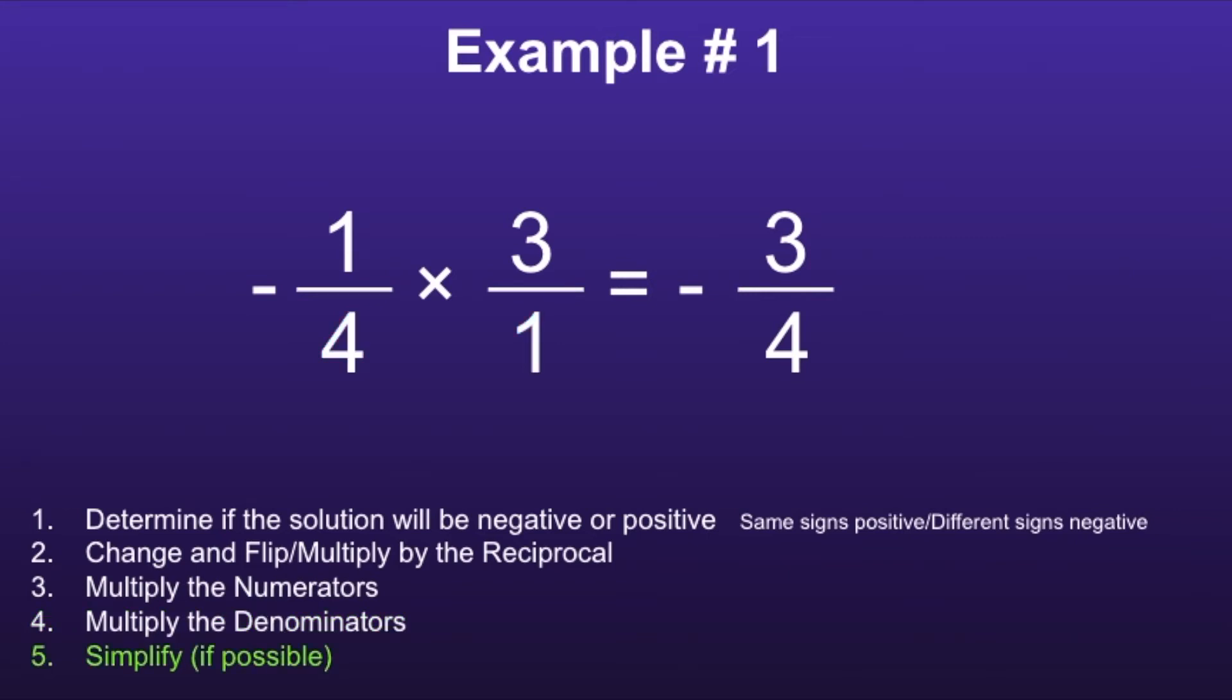And finally, step five: simplify if possible. Three-fourths is the final simplified answer, so we can't simplify anymore. So the final answer will be negative three-fourths.